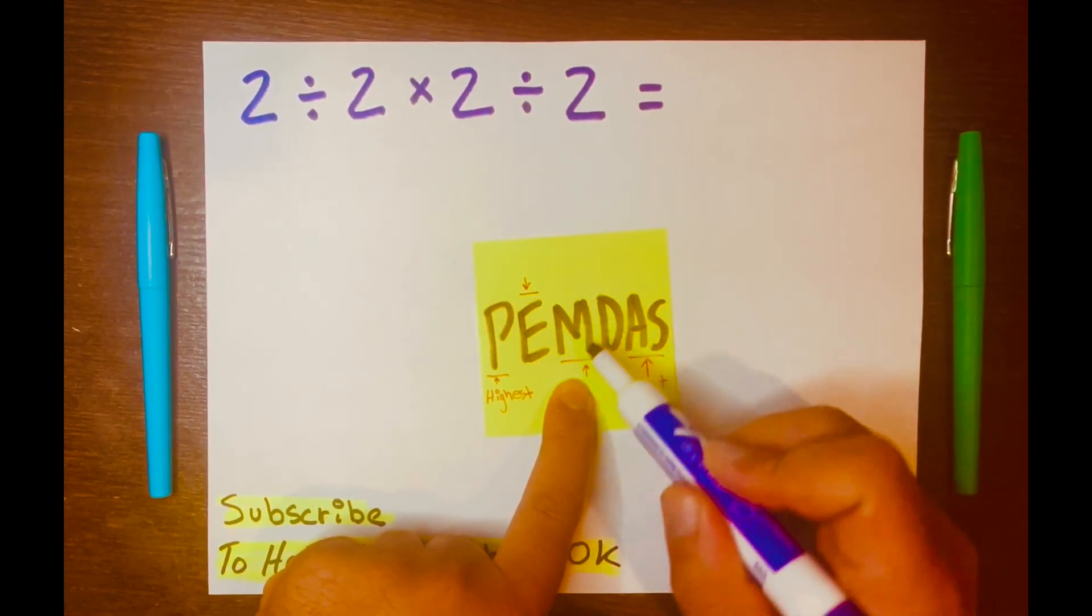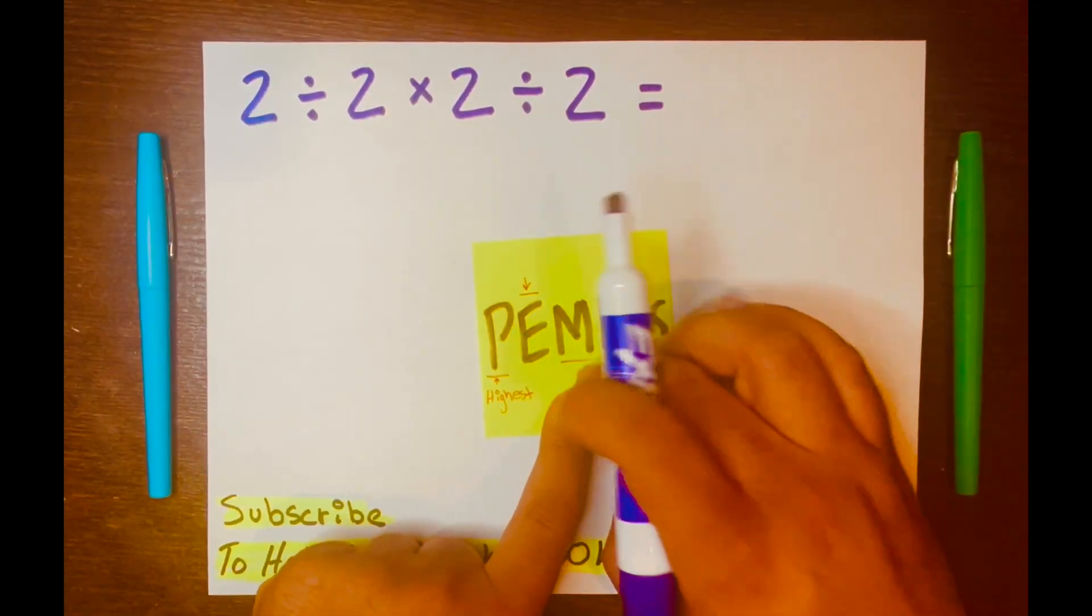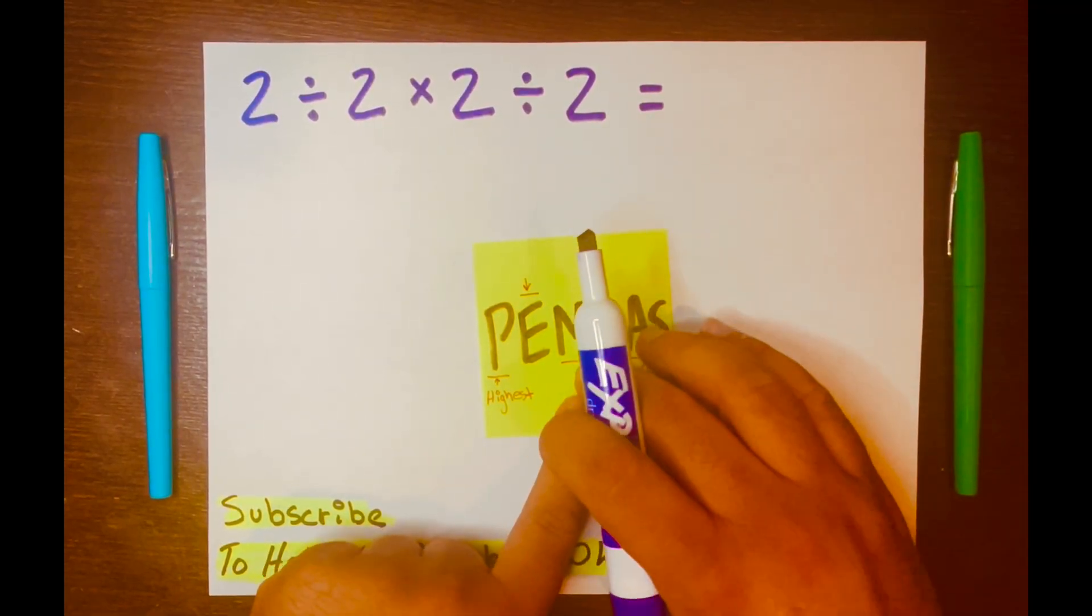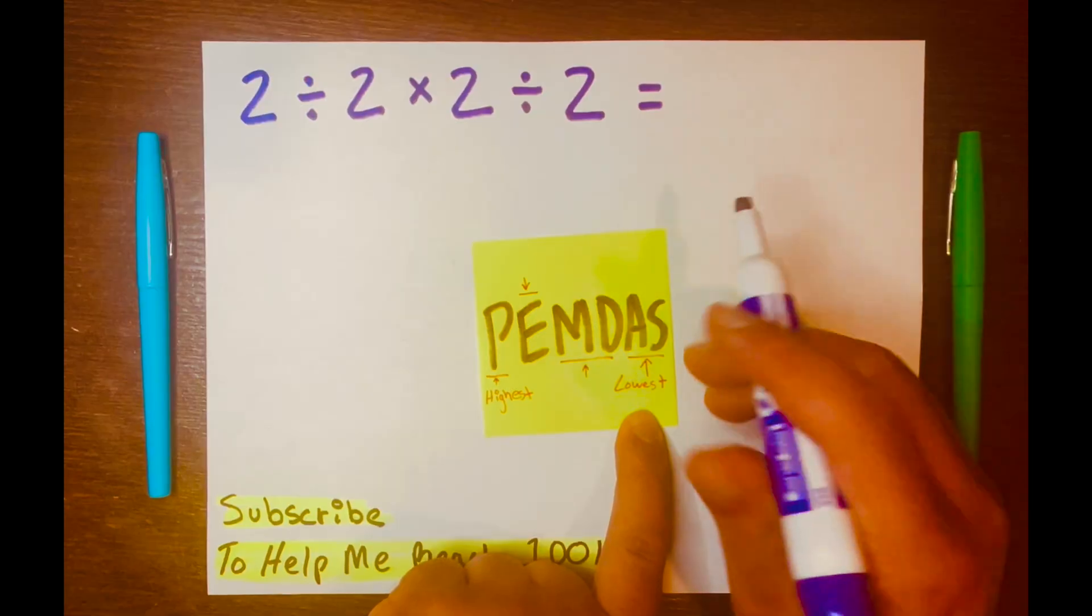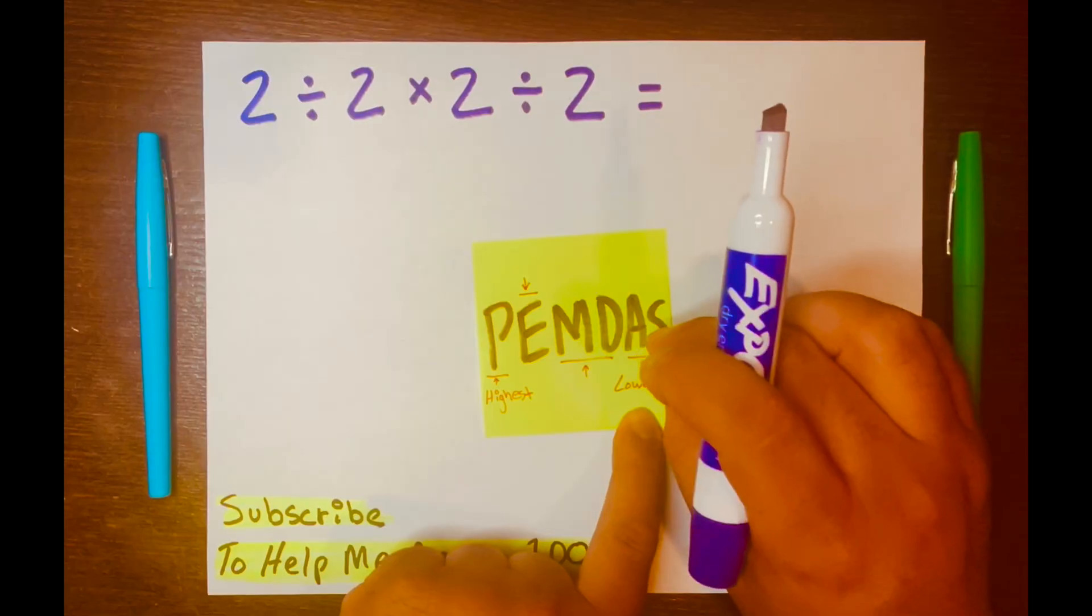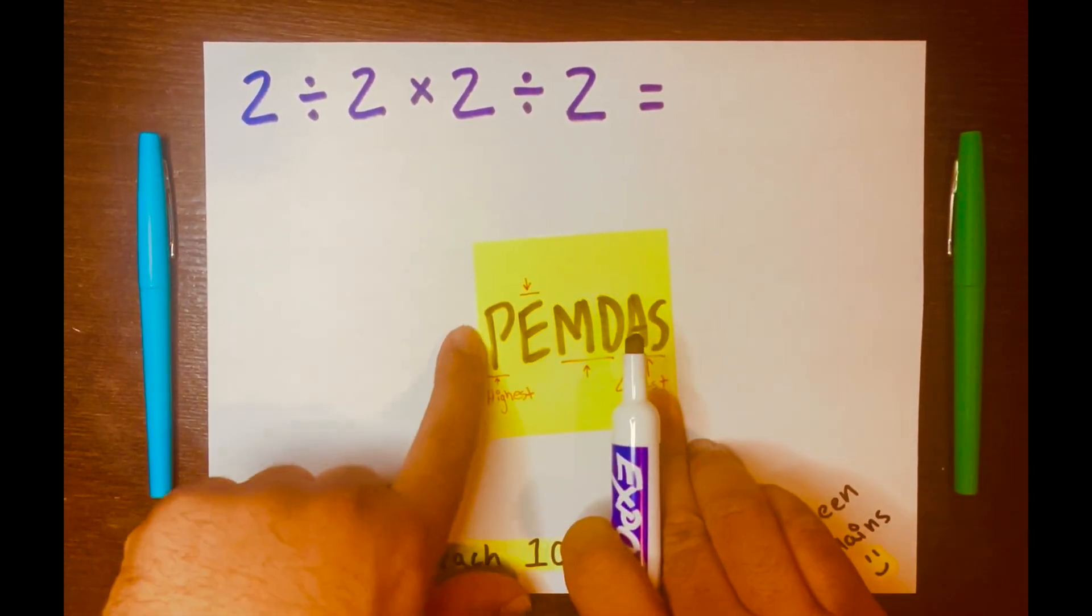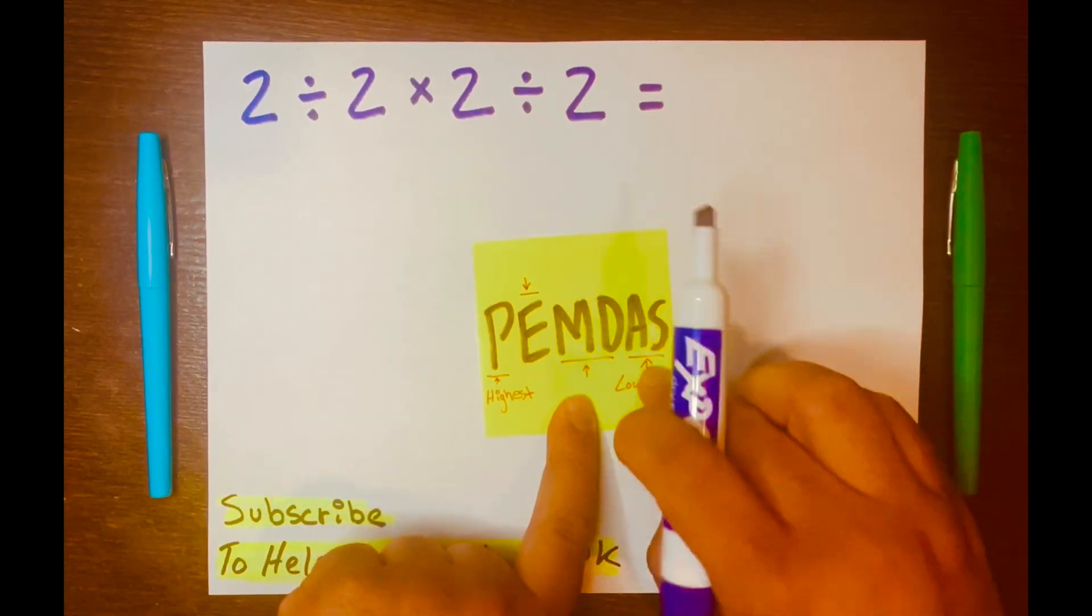Then you have MD, which both operations, multiplication and division, are within its level. So that'll be the third level. And then the lowest level, AS, stands for addition and subtraction. That will be in its own level. So you have four different levels, P being the highest level and AS being the lowest level.